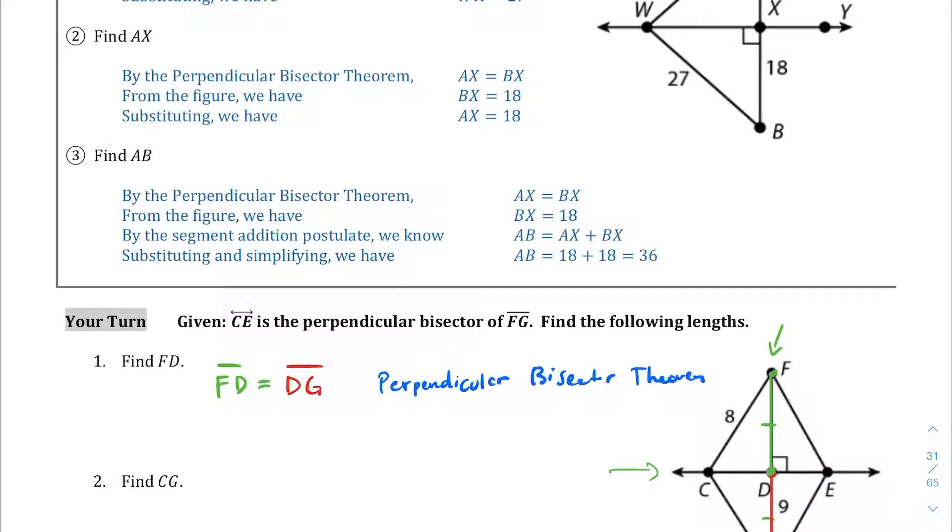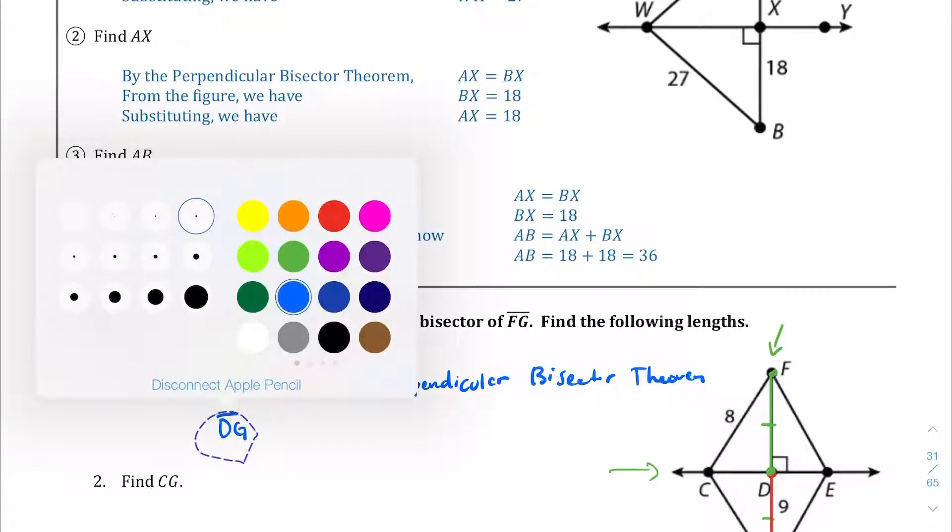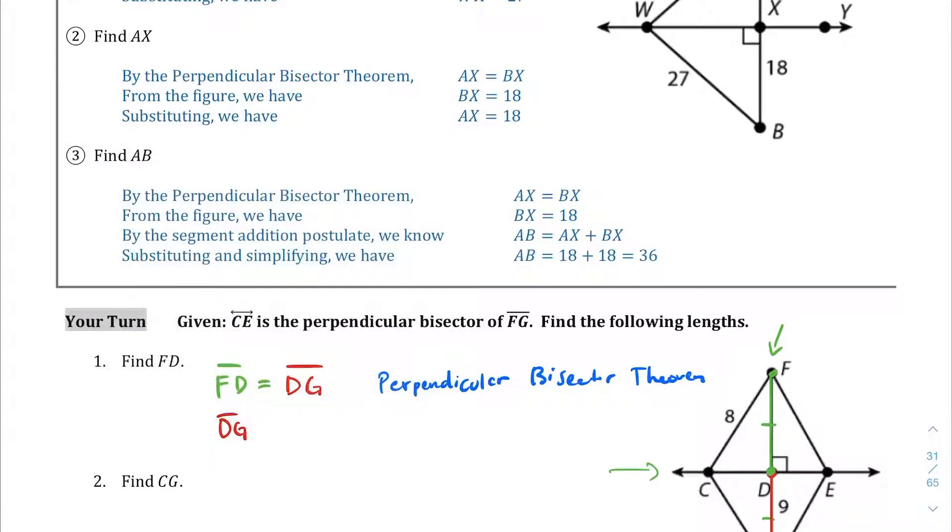Now that we've established that, we also are given the fact that DG is equal to 9. So let's go ahead and write that. Segment DG is equal to 9, and that's given. Above they wrote from the figure we have, but I'm just going to write given because it is given for us right here. DG is equal to 9. And then lastly, if we substitute 9 for where DG is, we can finally say that segment FD is equal to 9 by substitution.